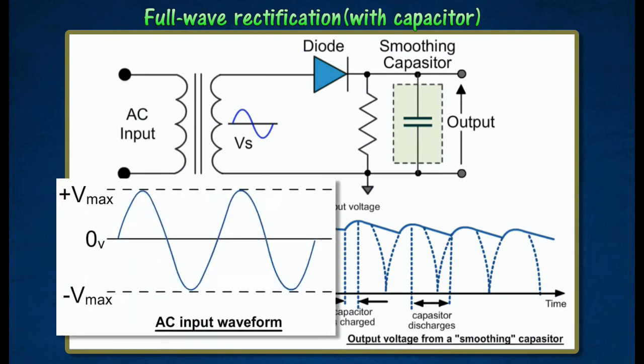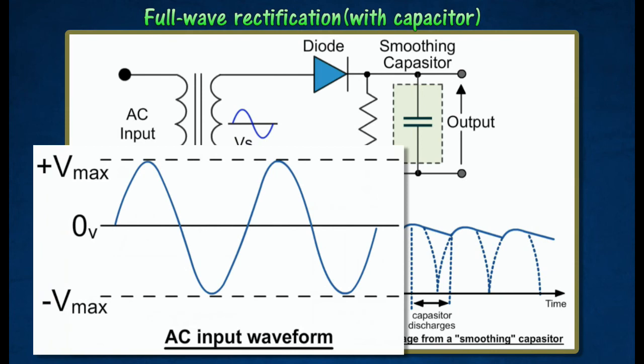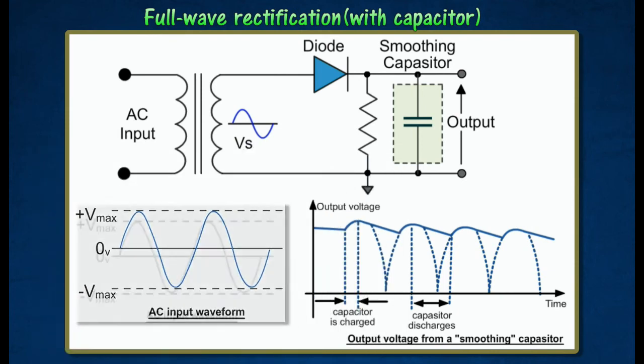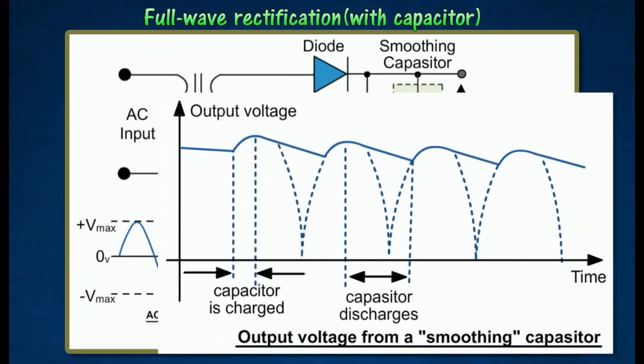The capacitor collects charge during the surges and releases it when the voltage from the rectifier falls. Thus, the output voltage produced by the capacitor is in the form of a smoother wave.